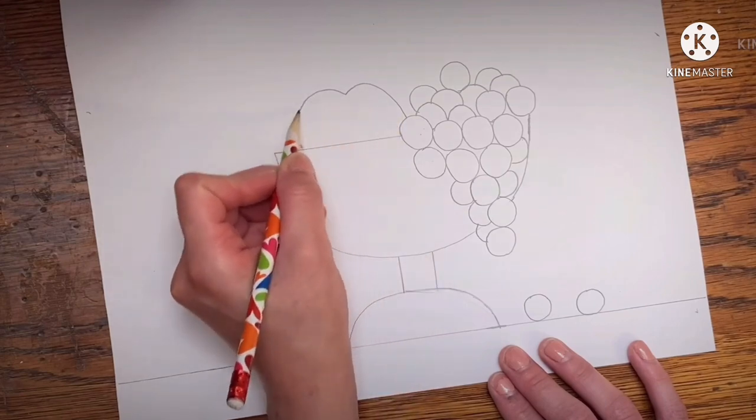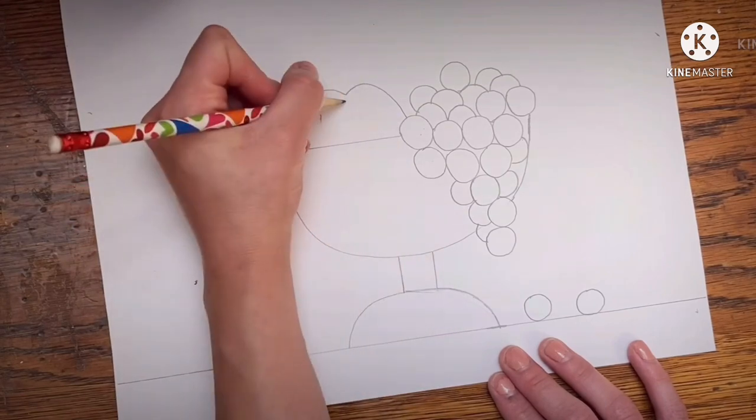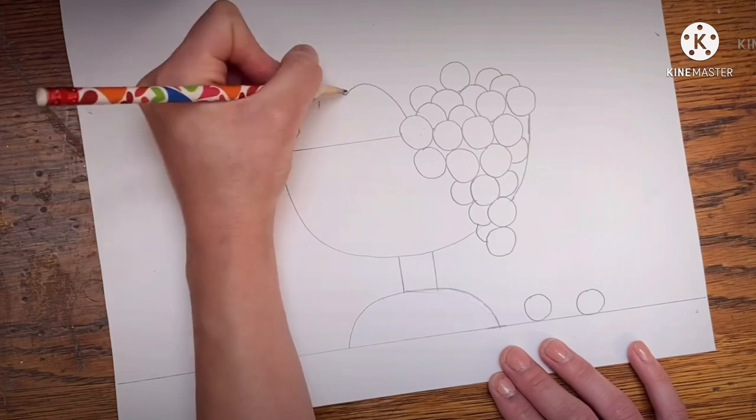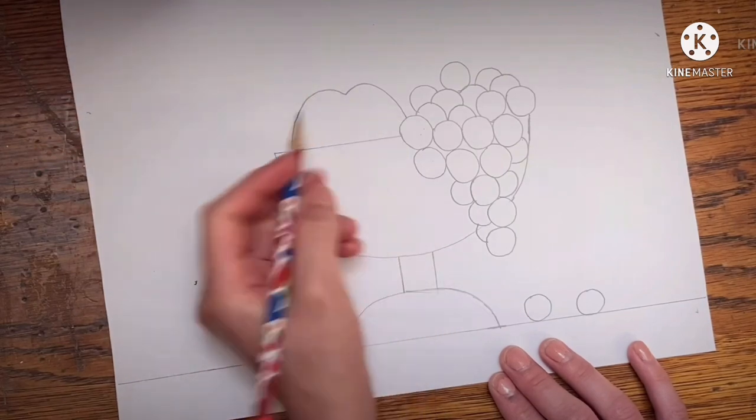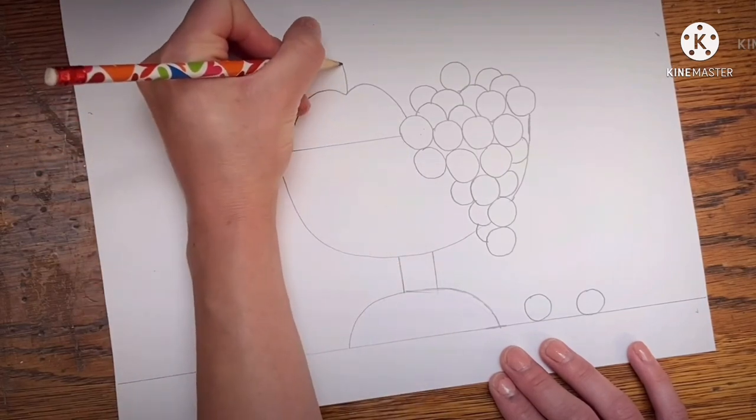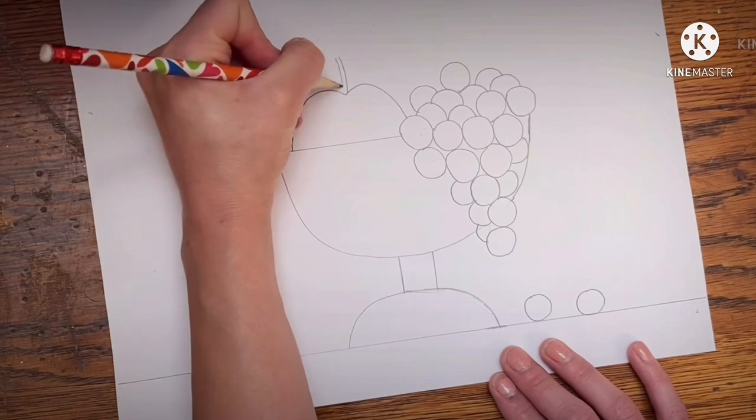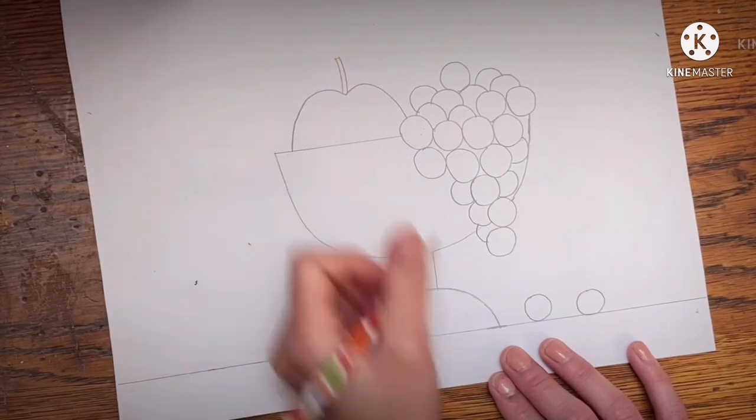So let's draw what looks like the letter M, but don't make the M come down so far. And then when you're done drawing the shape of your apple, draw two lines super close together to make the stem.